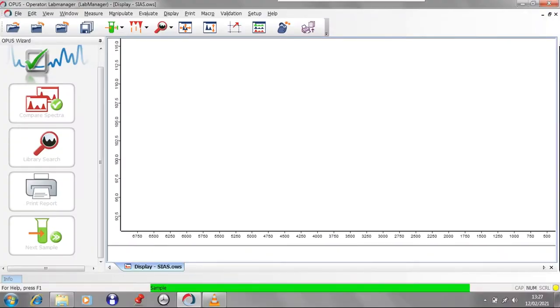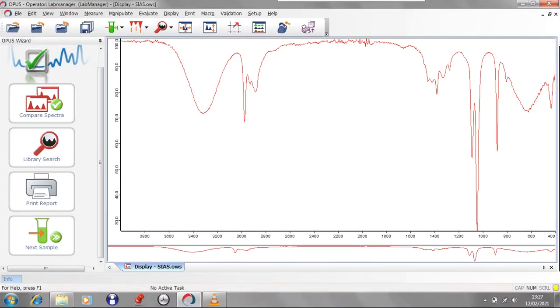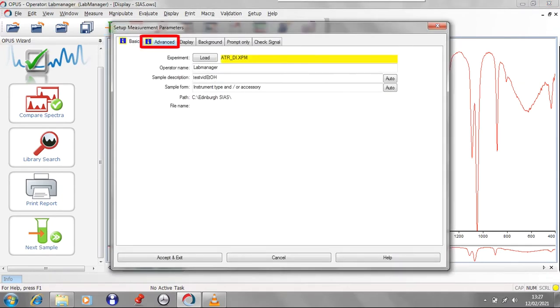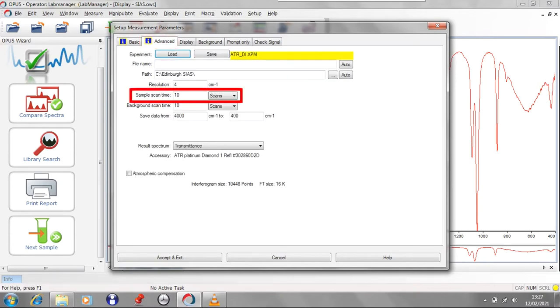Once the sample measurements are completed, your spectrum is displayed. You can increase the number of scans taken during sample measurement and set up measurement advanced settings as shown for increased sensitivity. Be aware, however, that this will mean sample measurements will take longer to run. Ten scans will give high enough quality data in most cases.